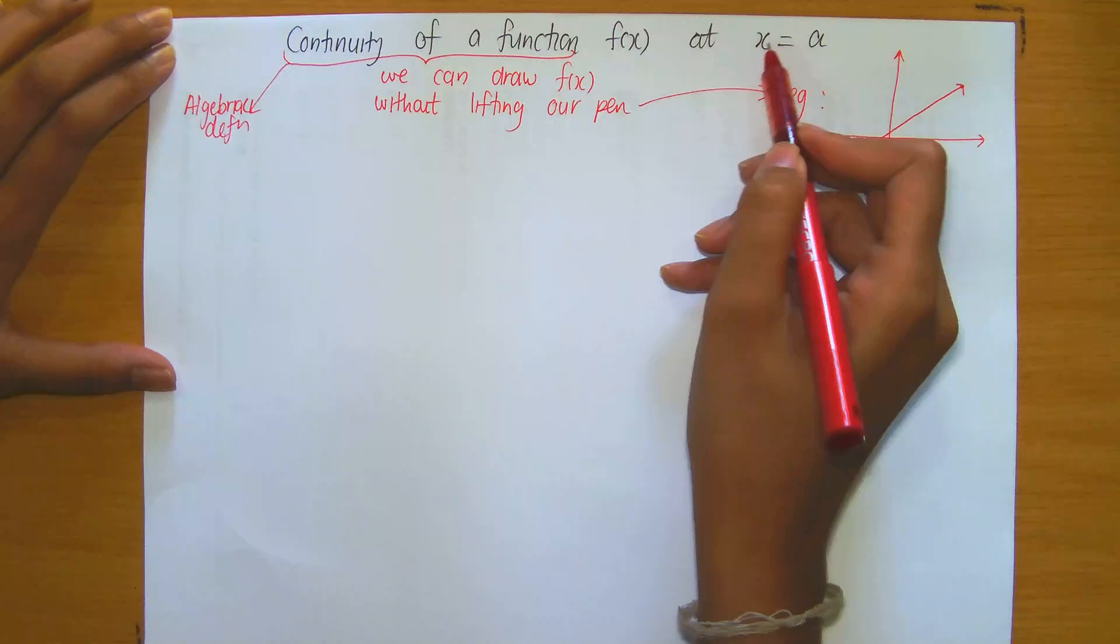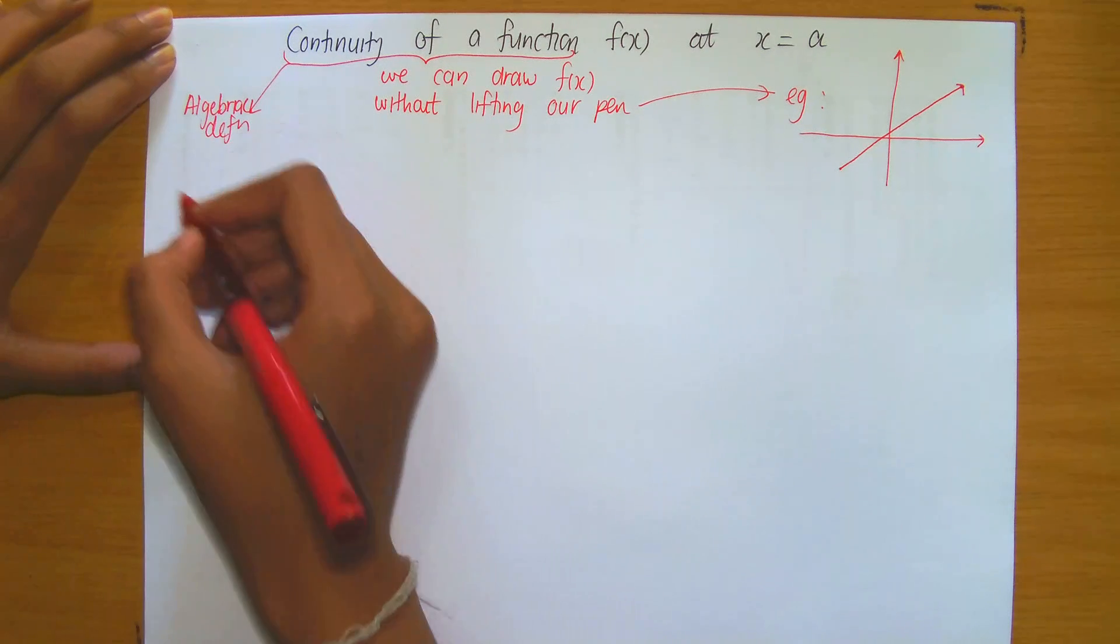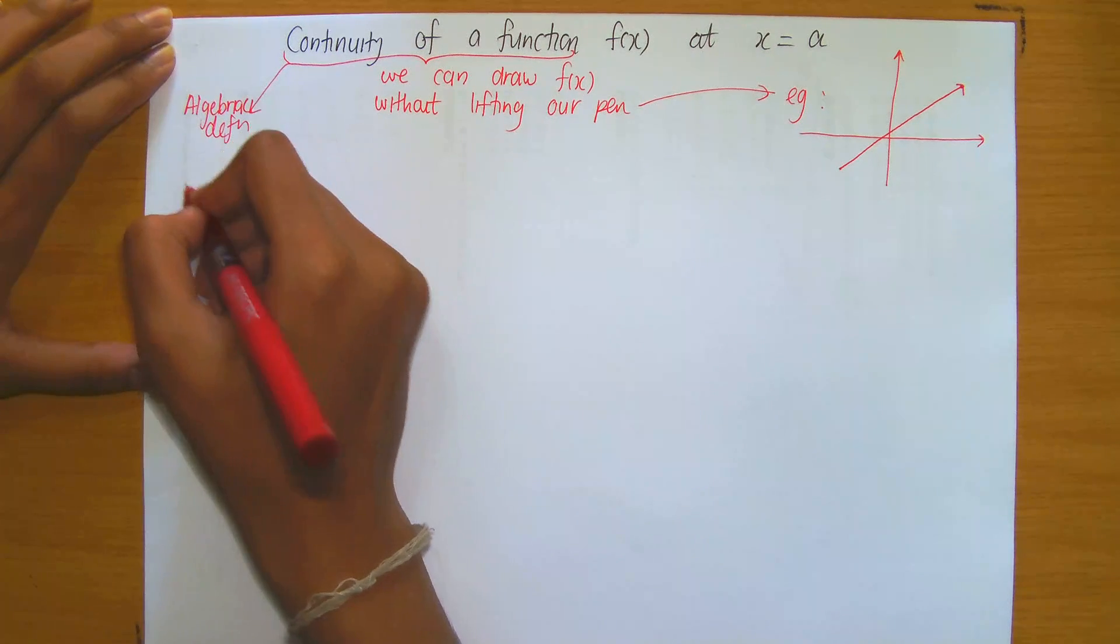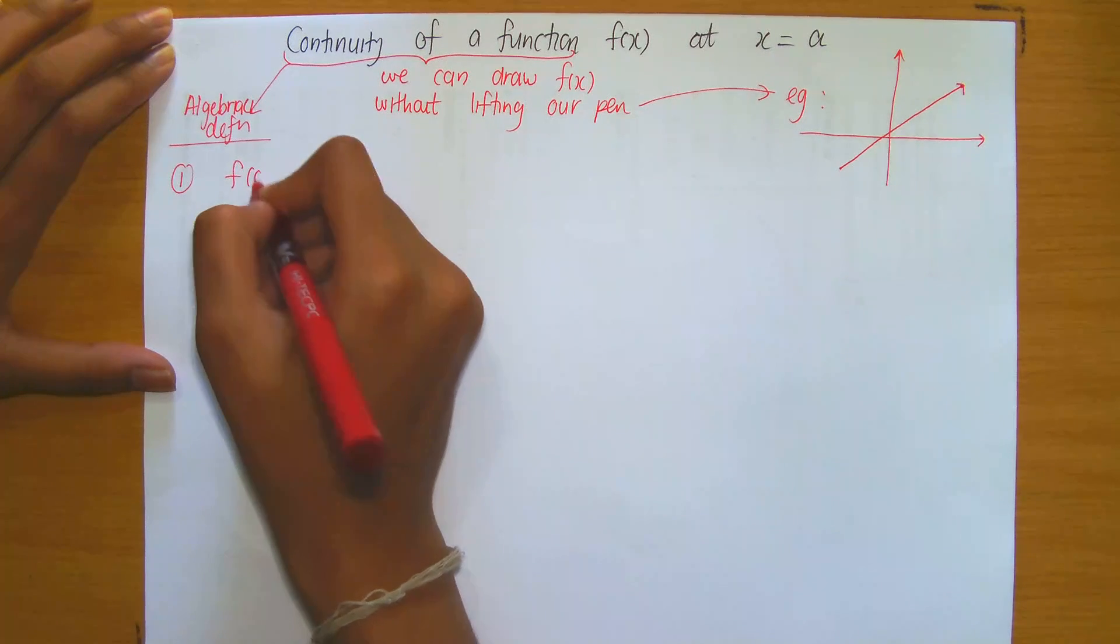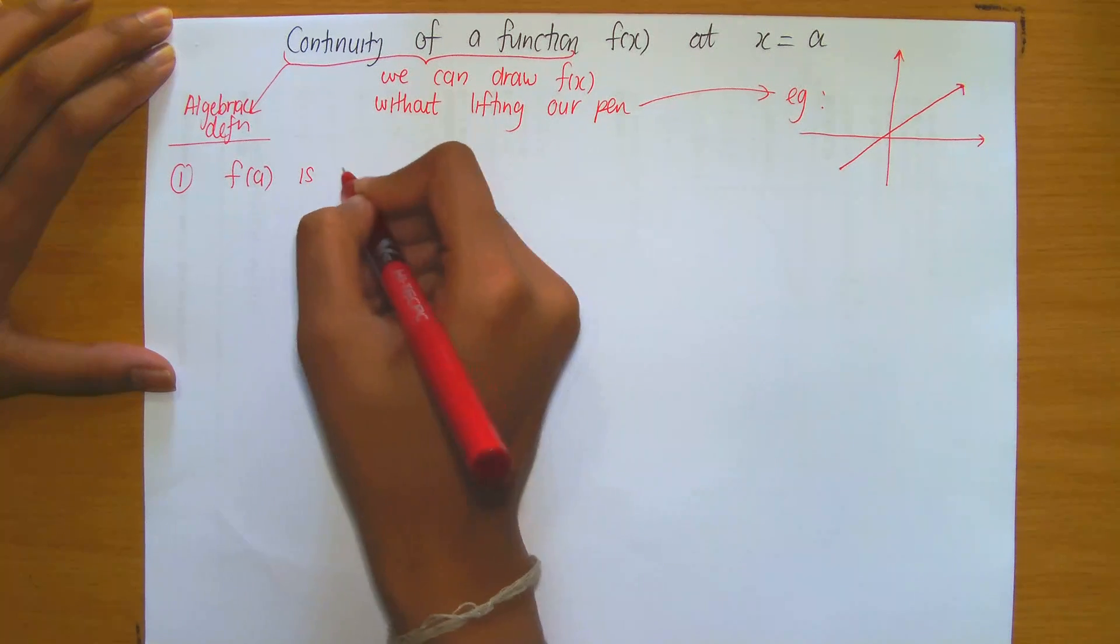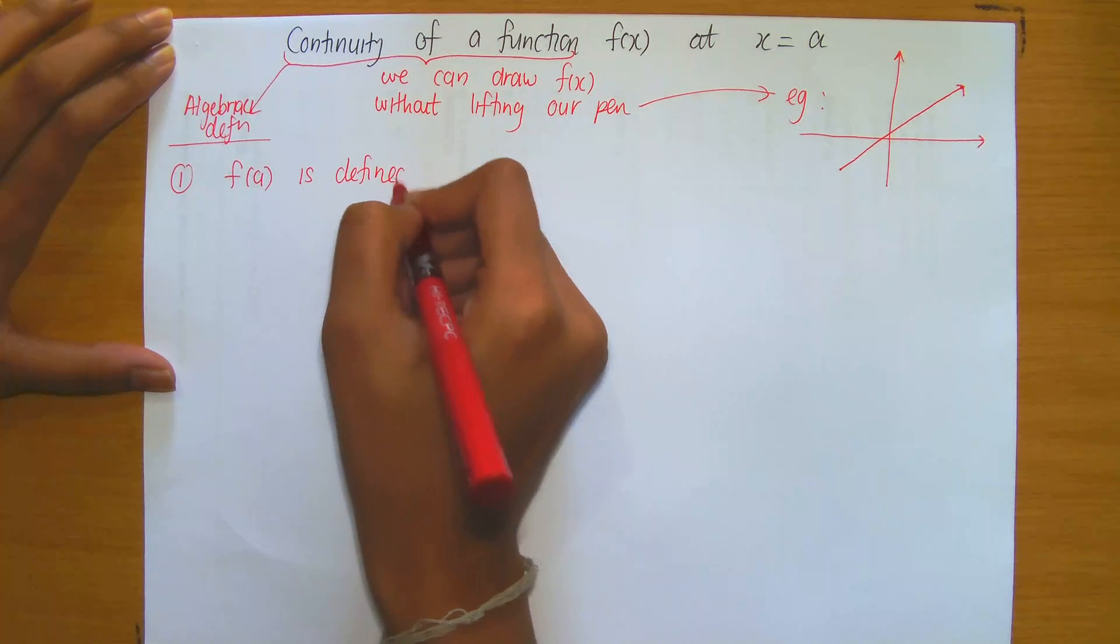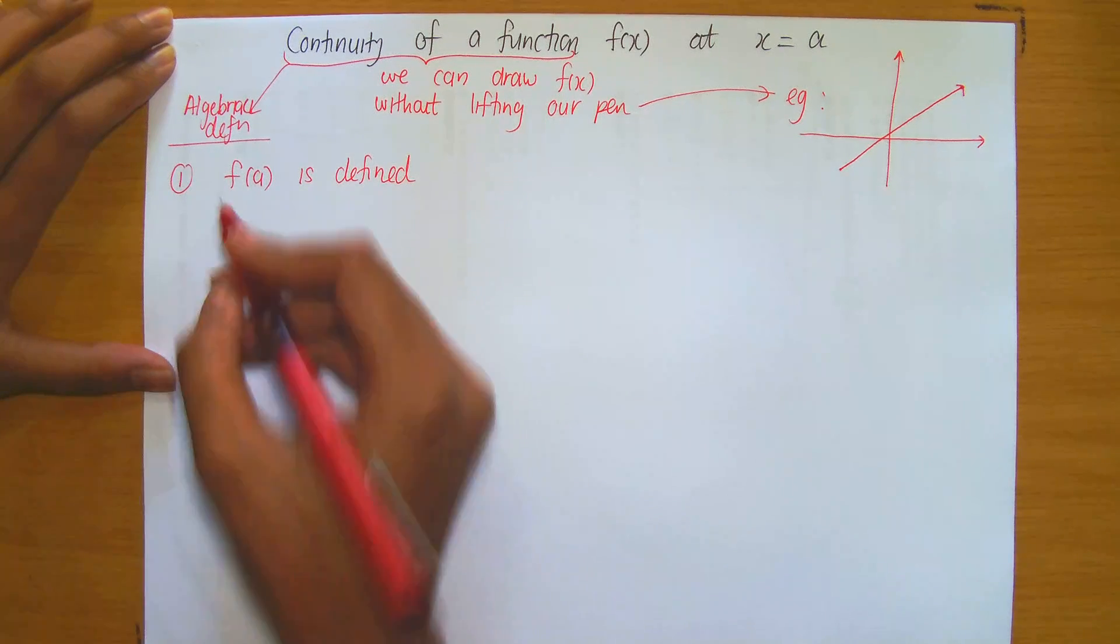A function f(x) is continuous at x equals a if the following are satisfied. The first is that f(a) is defined. That's the first condition.